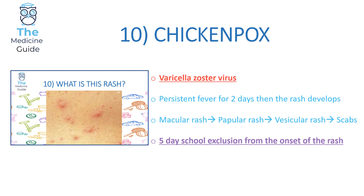Rash 10 is chickenpox, caused by the varicella zoster virus — very important for exams. A child will have a persistent fever for two days and then the rash develops. Initially it is a macular rash, becoming papular, then vesicular, and finally scabbing over. Children suffering from chickenpox need to be excluded from school for five days from the onset of the rash, or until all lesions have scabbed over.